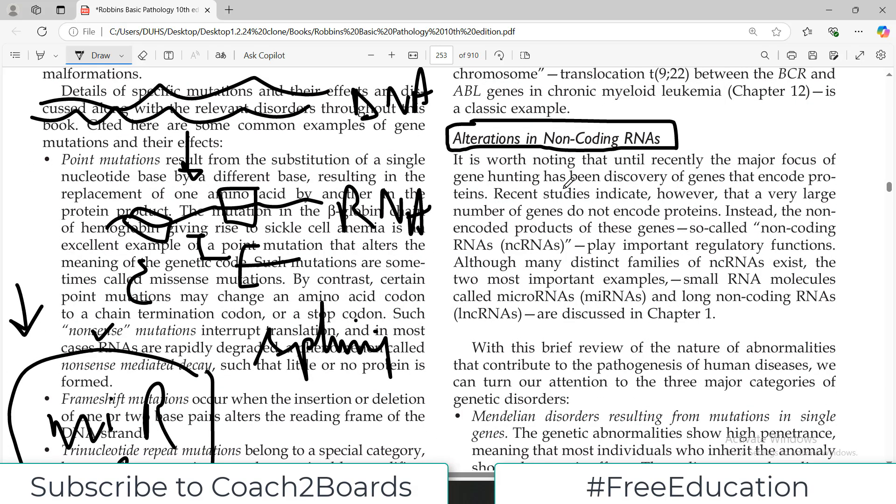So it is worth noting that until recently the major focus of gene hunting has been discovery of genes that encode for proteins. Recent studies, however, indicate that a very large number of genes do not encode for protein. In fact, if you ask me, most of the genome does not code for protein.